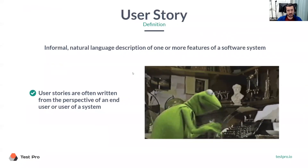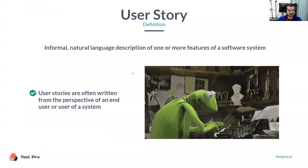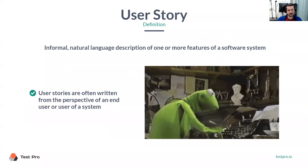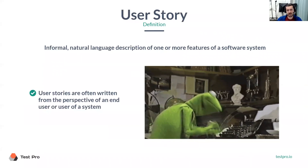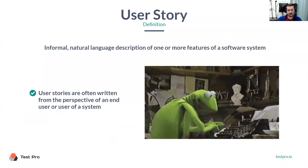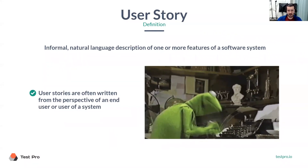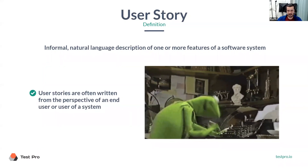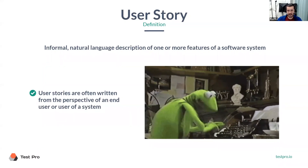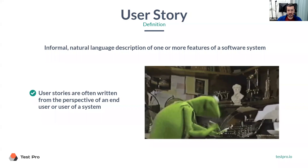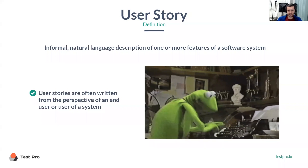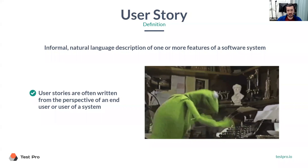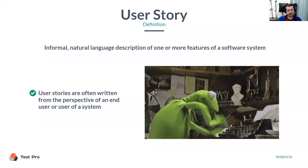So what is a user story? It's an informal, natural language description of features. While developing, if you remember, it's how product owners write the request for a feature. I'm going to show you an exact one for this project, so we will be testing that one.